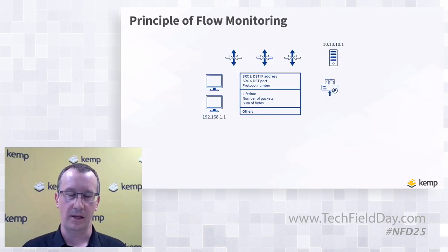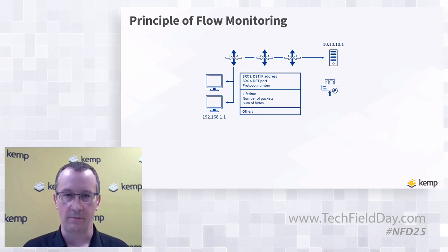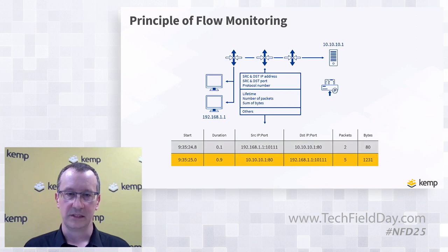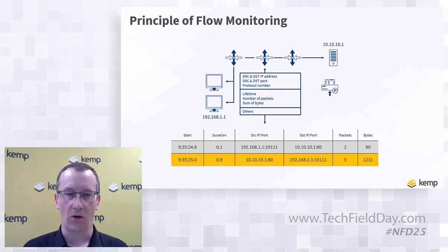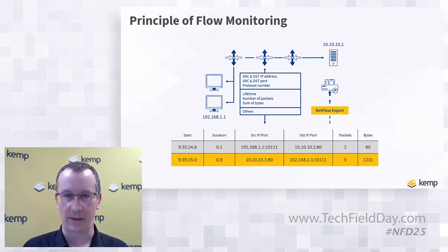Our speciality is probes that expand on the traditional flow monitoring principle. In traditional flow monitoring, you focus on layer three and layer four information and create flows based on source IP address, destination IP address, source port, destination port, and protocol number. You aggregate all packets sharing those common attributes into statistical records that describe network traffic — all network sessions, packet counts, data transferred, session duration, and TCP flags recognized in the traffic.